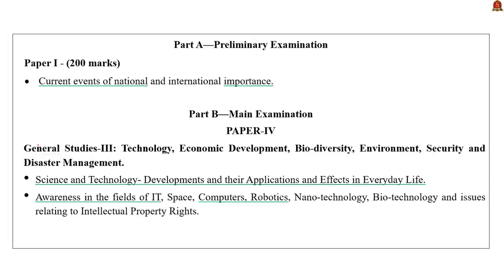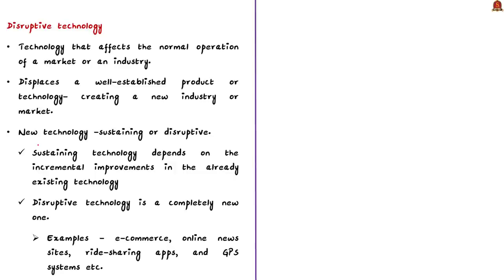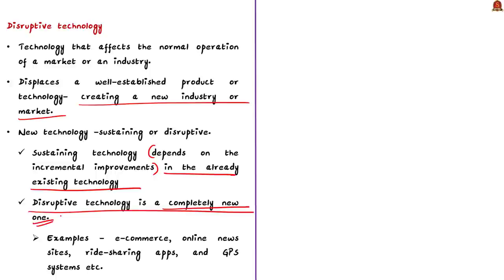Disruptive technology is technology that affects the normal operation of a market or industry — displacing a well-established product or technology and creating a new industry. Unlike sustaining technology, which depends on incremental improvements to existing technology, disruptive technology is completely new. Early examples include the invention of the wheel and electricity. Recent examples include e-commerce, online news sites, ride-sharing apps, and GPS systems.